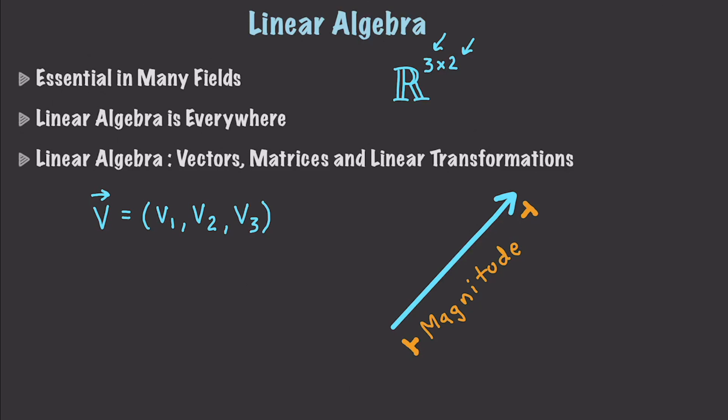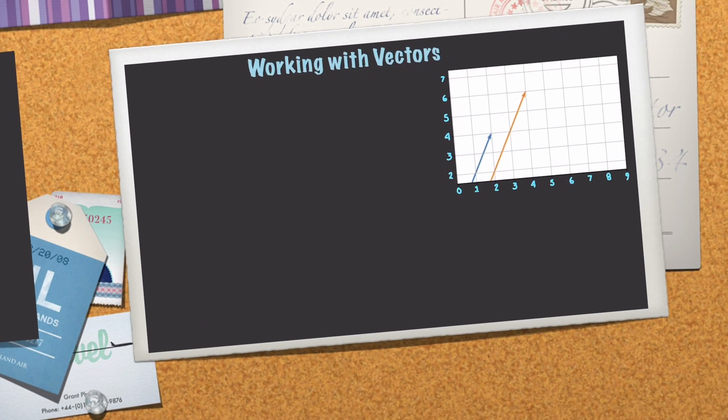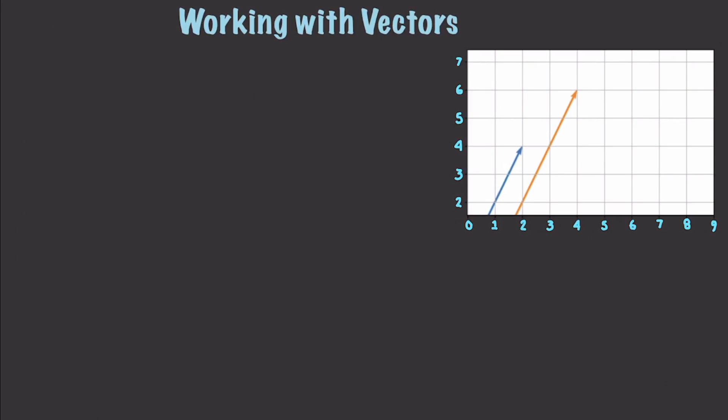And if we throw in another value, this would represent a three-dimensional vector. A vector is going to have a direction as well as a magnitude. Now the very first thing I want to talk about is scaling a vector. Scaling a vector involves multiplying all values in a vector by a scalar, which is just a value with magnitude but not a direction.